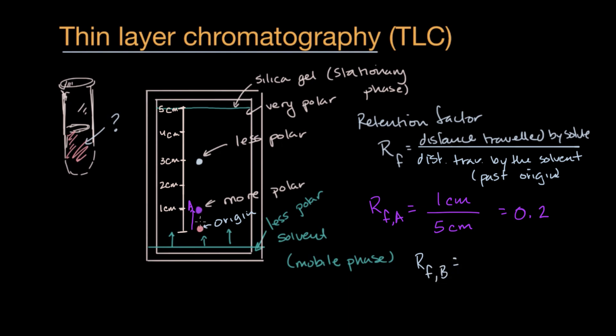Then the retention factor for substance B is going to be equal to, how far did it travel? Well, it traveled three centimeters out of a total of five centimeters for the solvent past this origin, past where we put the sample right over there. Five centimeters, which is equal to 0.6.